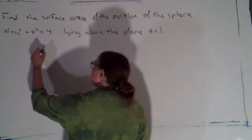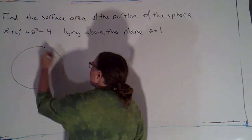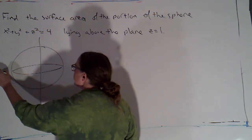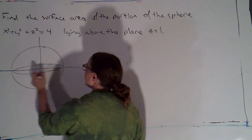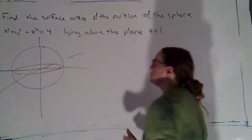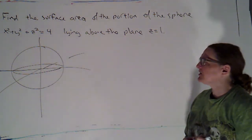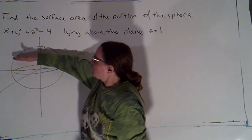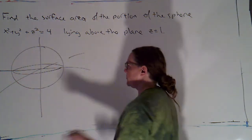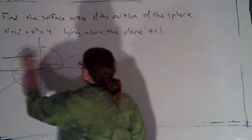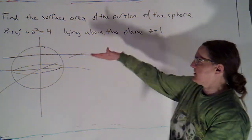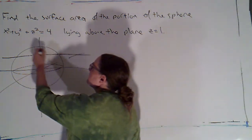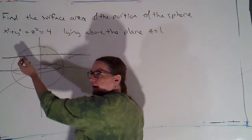I'd like to have a picture of what's going on, at least a mental picture. It's not absolutely necessary that you draw everything. I know what a sphere looks like, and a plane of height z equals 1 is just going to cut through it like so. I'm going to draw a line to represent the plane coming straight out from the board — I'm trying to find this portion of the surface area.